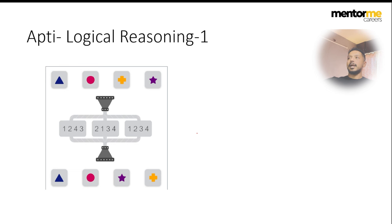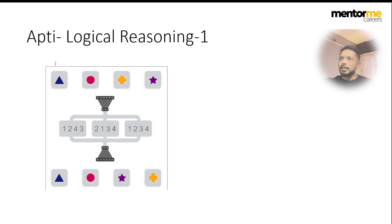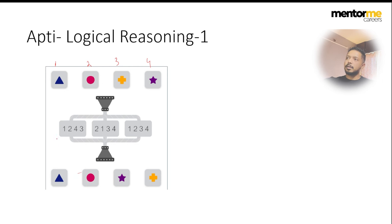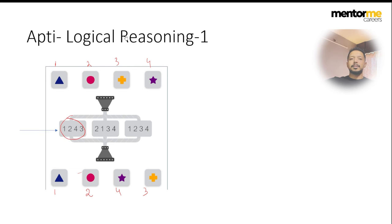This is a deductive logical reasoning question. There are symbols: a triangle, circle, plus sign, and star — numbered one, two, three, and four respectively. The question asks which code converts one order into another. You can see the triangle stays, the circle stays, but the star comes before the plus sign. So the code is one, two, four, three.